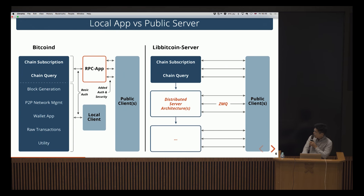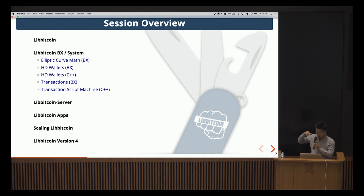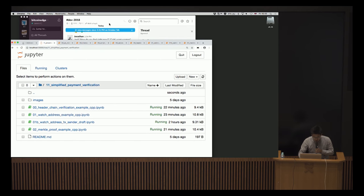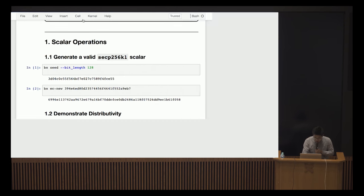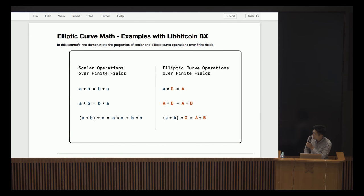Scalability and security are key benefits for running a public server like the Libbitcoin server. The following examples are mostly around the command line tool and basic Libbitcoin system classes and methods. You got an intro yesterday on most of this stuff, but it might be valuable to see how it looks in Libbitcoin. I recommend if you're not too familiar with EC math to run this at home — we'll go through the classes demonstrating the basic properties of EC math needed in Bitcoin: scalar operations over finite fields and EC operations.